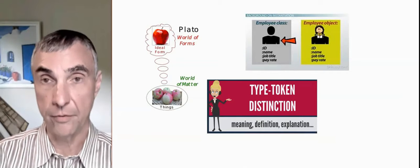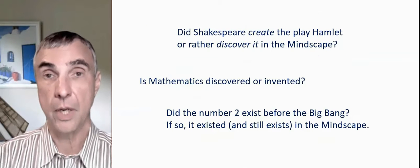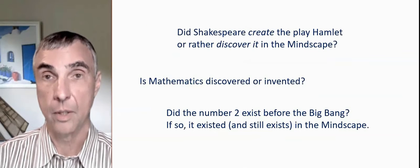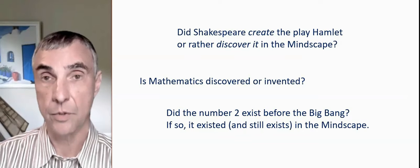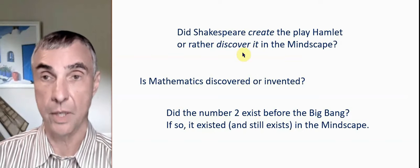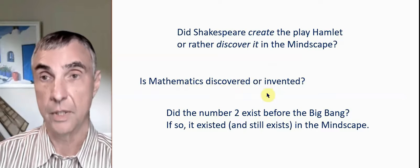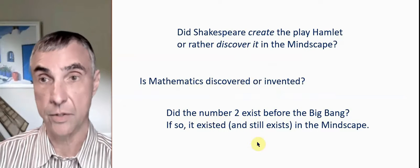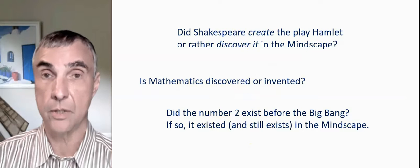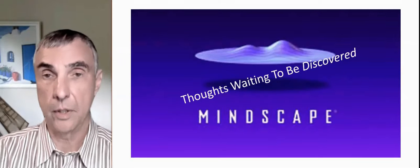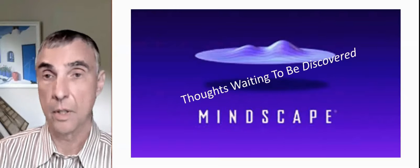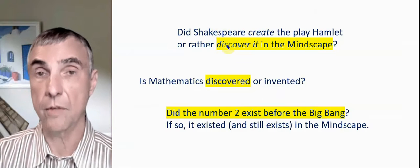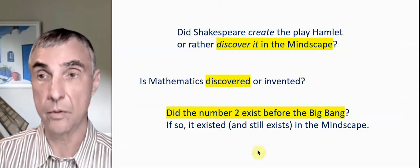So then the question arises, if we believe that the play Hamlet exists in the mindscape, was it always there? Or did it just enter the mindscape when Shakespeare wrote it? In other words, did Shakespeare create the play Hamlet, or did he discover it when the eye of his mind was traversing the mindscape? The same question could be asked in another way, is mathematics discovered or invented? Did the number two exist before the big bang? If so, it existed then, and it still exists today in the mindscape. So in this sense, the mindscape would be eternal. So if we take the mindscape as having always existed, unchanged, we would say that the mindscape contains all the thoughts that have been discovered and are waiting to be discovered. And so we would say that Shakespeare discovered the play in the mindscape, and mathematics is discovered, and the number two existed before the big bang.